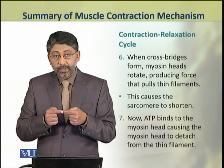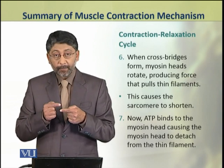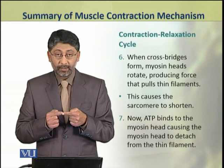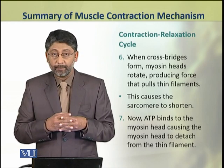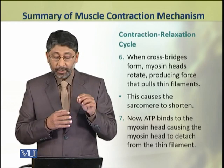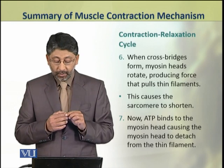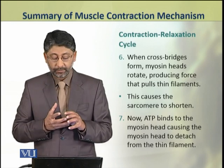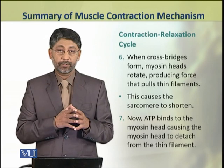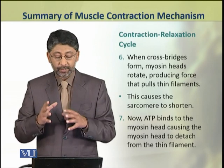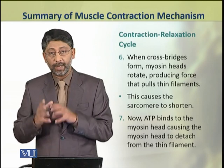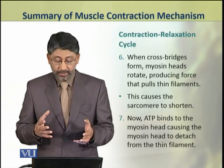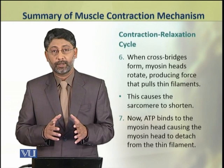The exposure of actin binding sites on the actin filament causes the cross bridges to form. When these cross bridges form, myosin heads rotate and produce the force that pulls the thin filaments. The pulling of thin filaments causes the sarcomere to shorten.